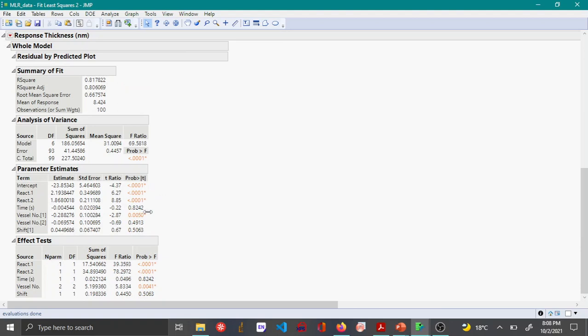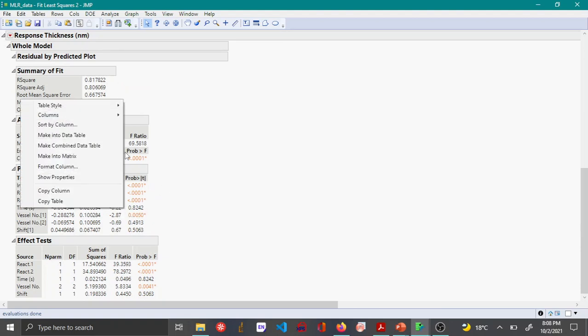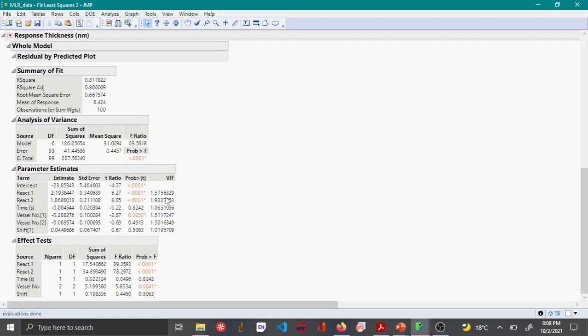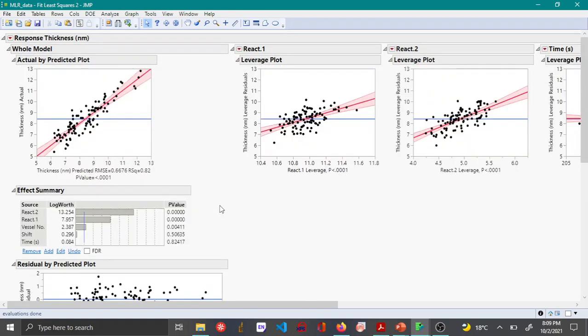Every time we remove a variable the VIF column will disappear, so in order to make it reappear you right click and go to columns and then say VIF. So now you can see that almost all the VIFs are between 1 and 1.5 or 1 and 2, which is good.